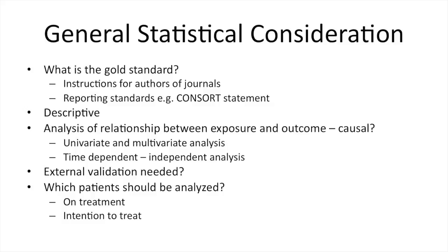For statistical considerations: the gold standard approach differs because each question requires a different statistical analysis. You can look at the instructions for authors in journals — for example, for investigating polymorphisms there are very specific recommendations. Look at reporting standards such as the CONSORT statement for interventional studies. Think about your descriptive analysis, the analysis of the relationship between exposure and outcome — do you need a univariate or multivariate analysis, a time-dependent or independent analysis, or external validation? Also consider which patients and which time points are analyzed: an on-treatment analysis covers only the time when the patient takes the intervention, whereas an intention-to-treat analysis covers all patients regardless of whether they took the treatment.